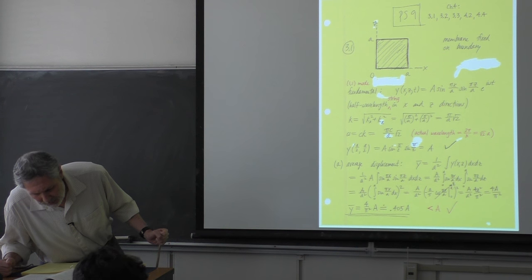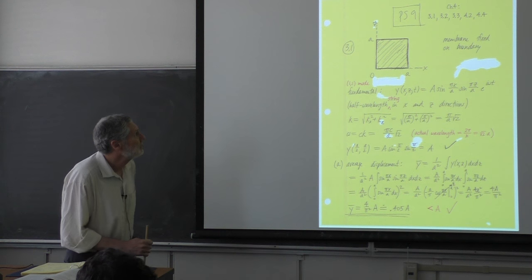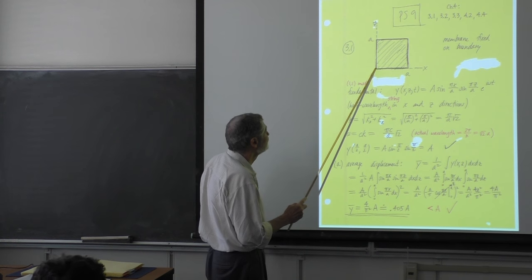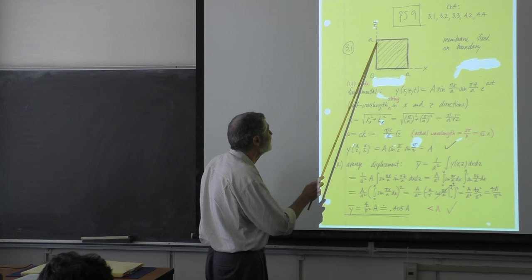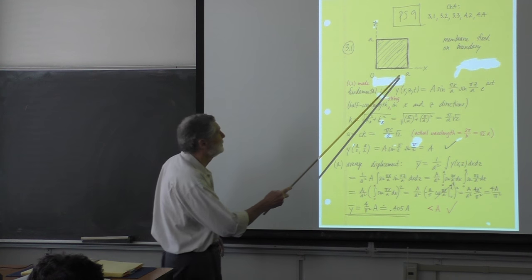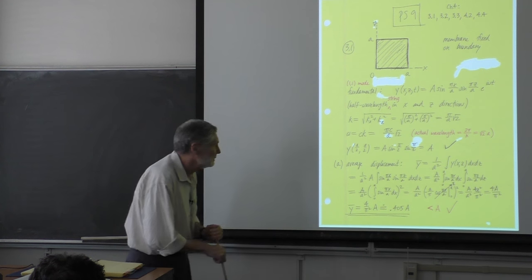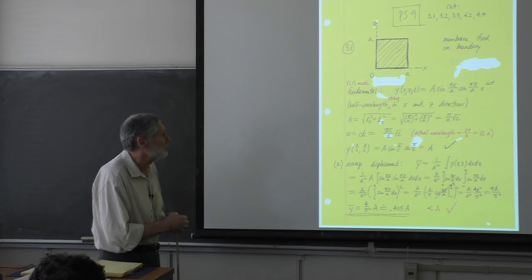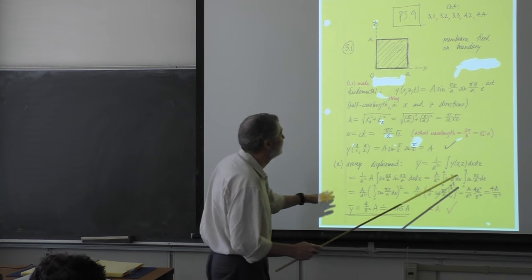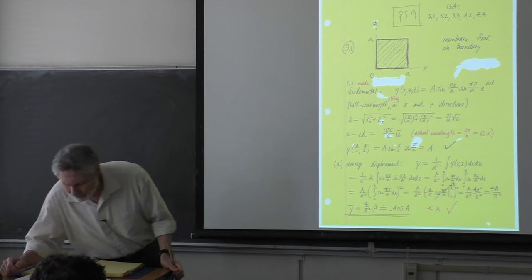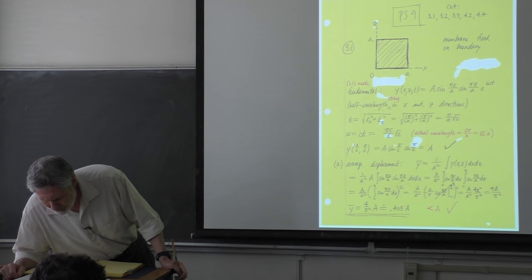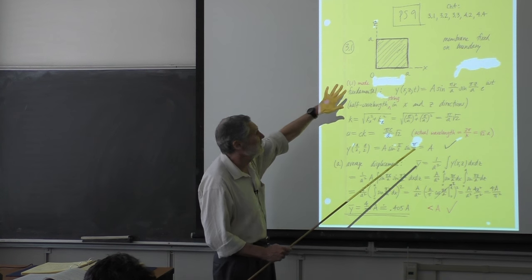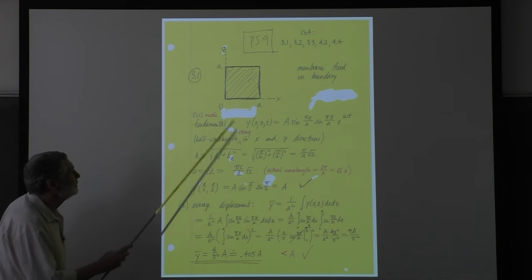These are actually interesting problems. The first one is 3.1 and we have a square membrane. This is the top view, and this length is the same as that length. We're not told what this length is, so we're not going to be able to get definite frequencies - we can't calculate all this numerically, but we can still do a lot. It's oscillating in its normal mode.